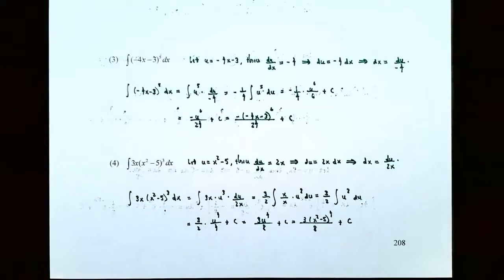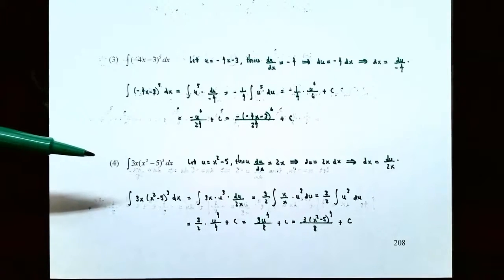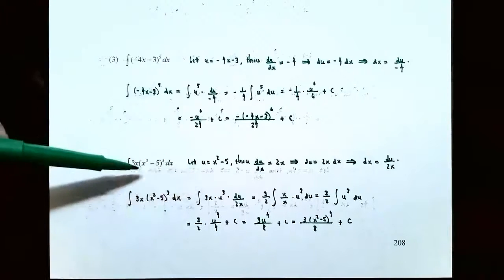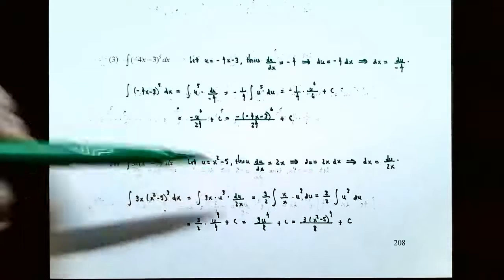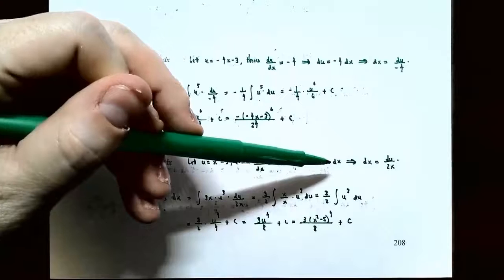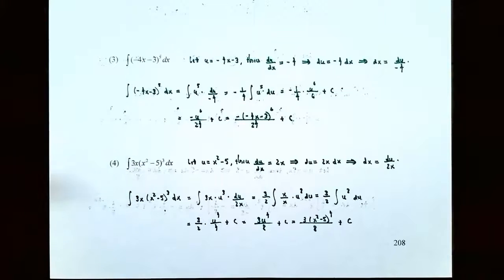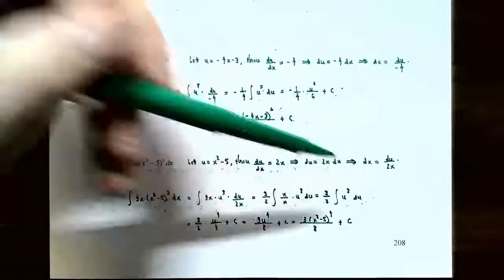Number 4: the integral of 3x times the quantity (x² minus 5)^3 dx. The inside function is x² minus 5, so let u = x² minus 5. Taking the derivative: du/dx = 2x. Multiply both sides by dx: du = 2x dx. Notice you don't have 2x dx in the integrand — you have 3x dx. So solve for dx by dividing both sides by 2x, giving dx = du / (2x).